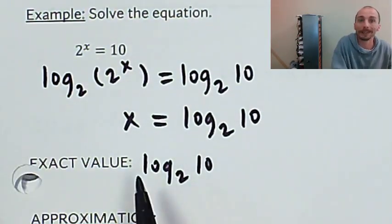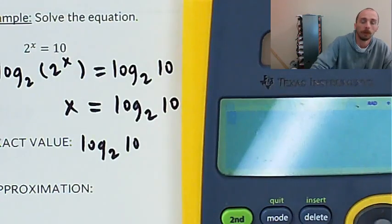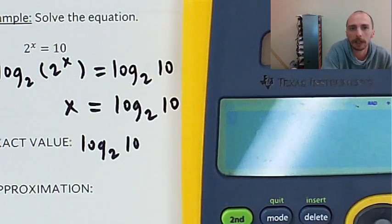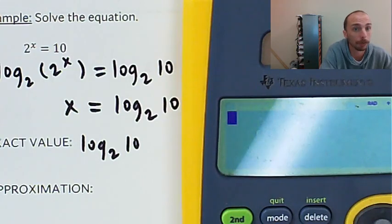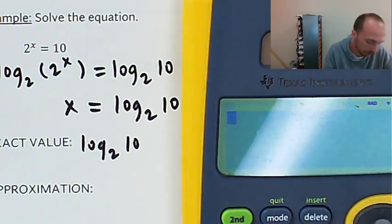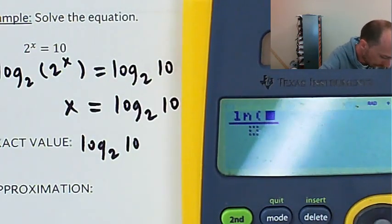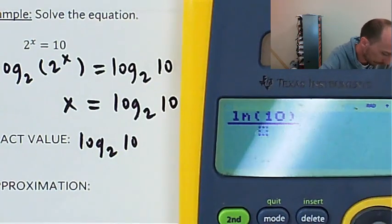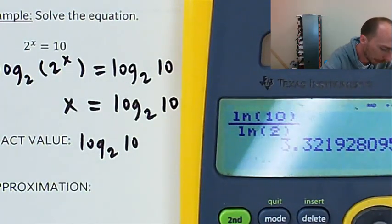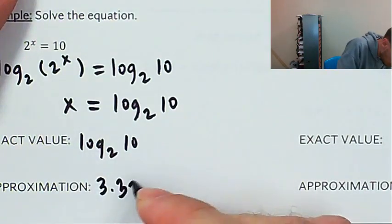The exact value is log base 2 of 10. An approximation would be a decimal we could obtain using the calculator. I brought out a scientific calculator. I'm going to use the change of base formula — natural log of 10 divided by natural log of 2 — and we get approximately 3.322. So that would be my approximation.